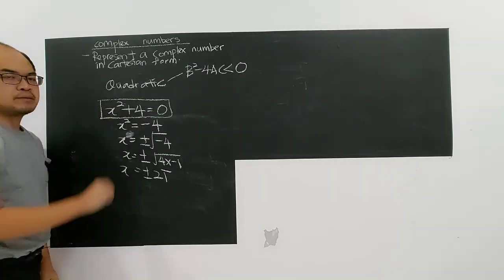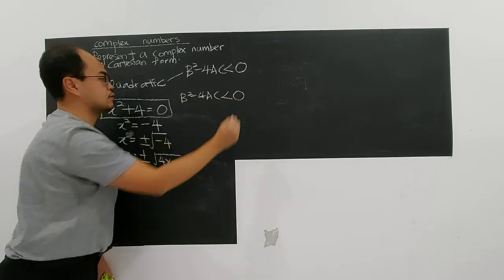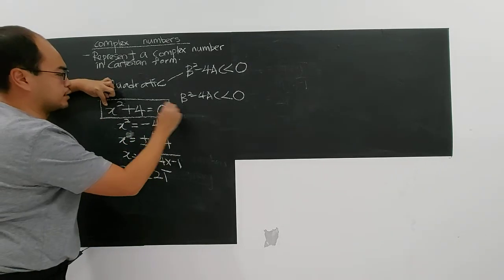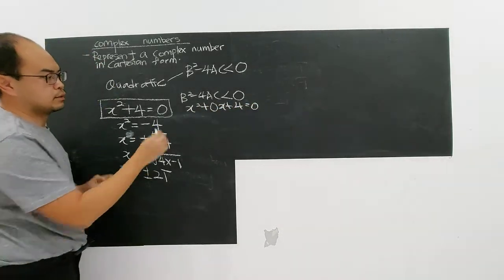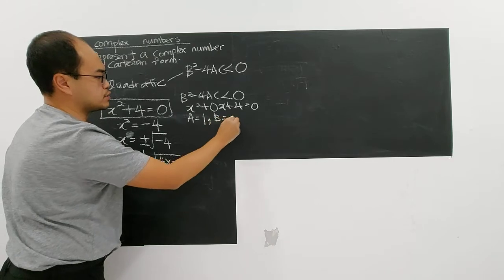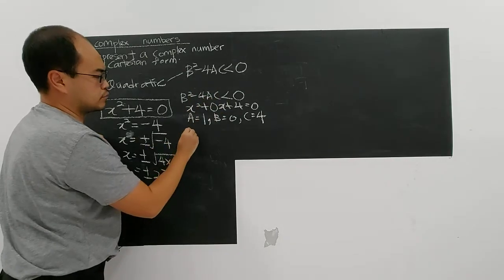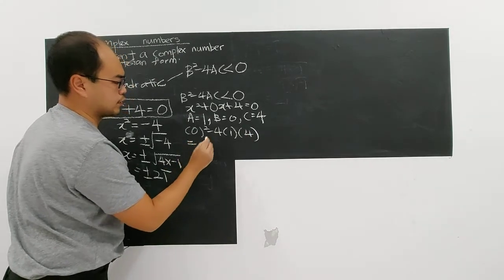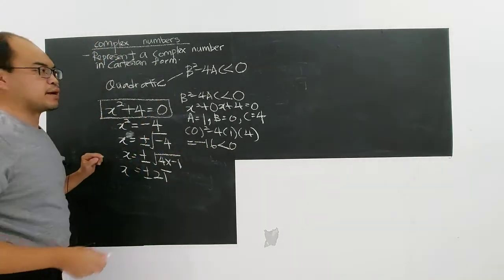You can verify: for x² + 0x + 4 = 0, your A is 1, B is 0, and C is 4. Using the discriminant B² - 4AC, you get 0² - 4(1)(4) = -16, which is negative — less than 0 — proving that this equation has imaginary roots.